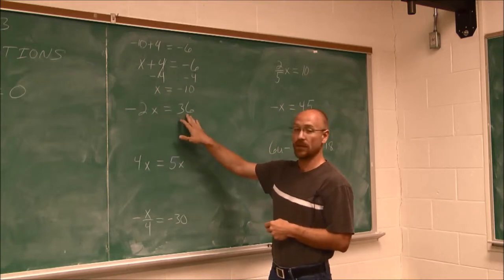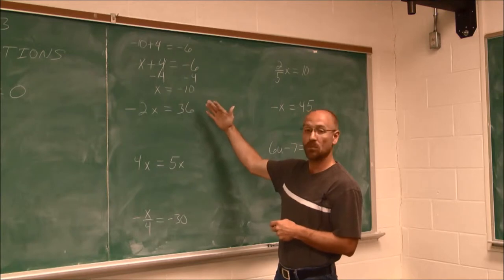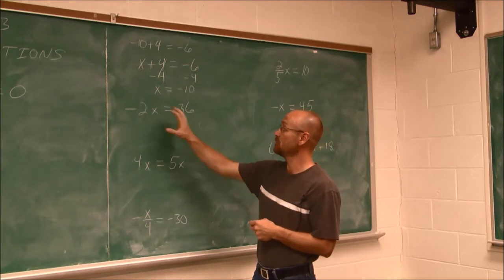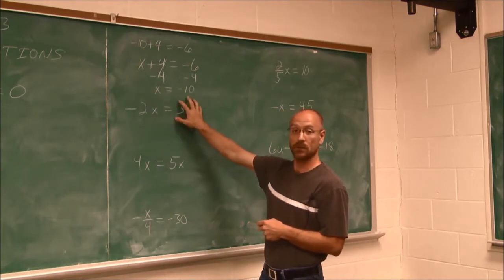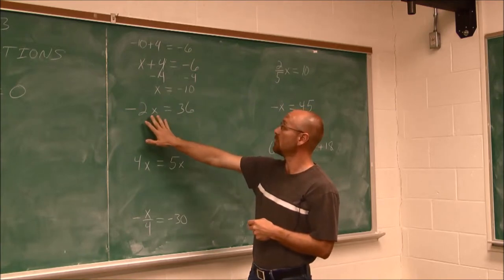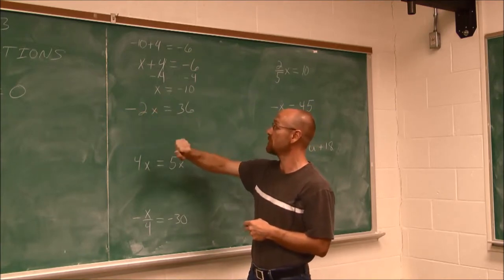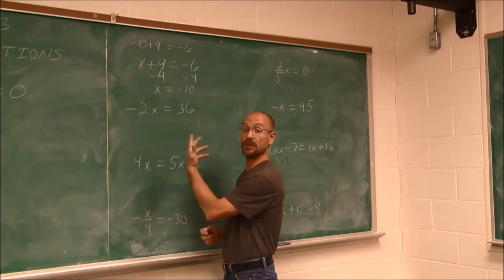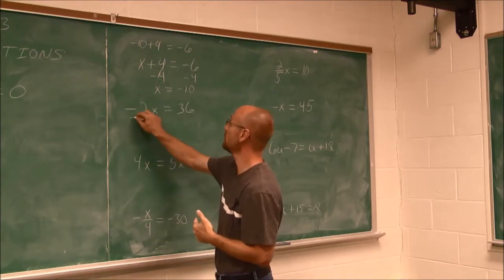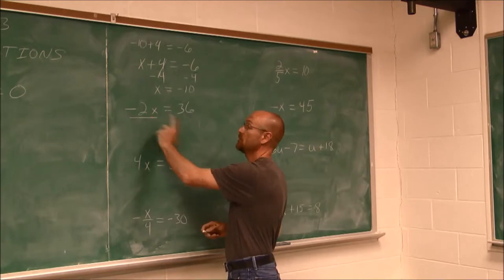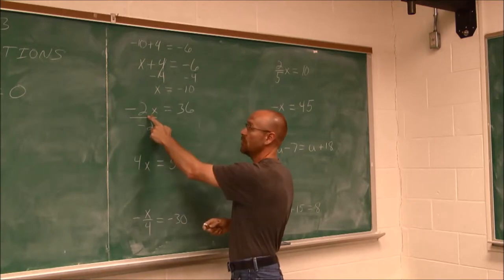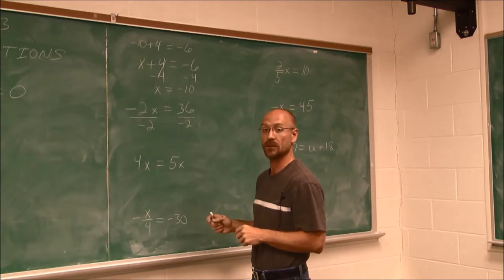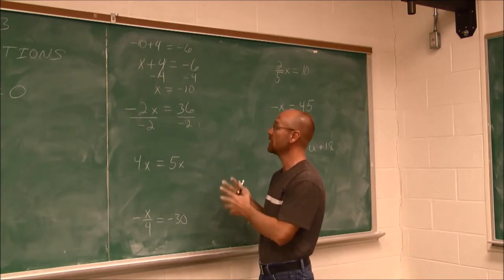We have negative 2x equals 36. There are no parentheses, and there is no addition or subtraction — just a term equal to another term. I see multiplication: negative 2 times x is 36. I can undo this multiplication using its opposite operation, division. I'm going to divide by the coefficient, negative 2. What I do to one side, I have to do to the other — that's the property of equality.